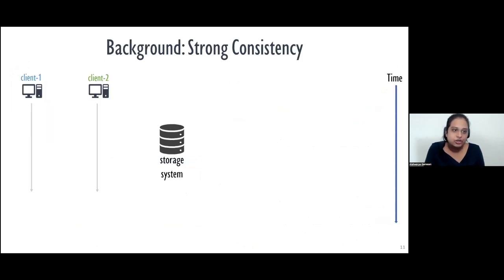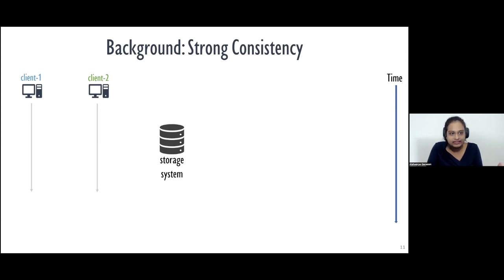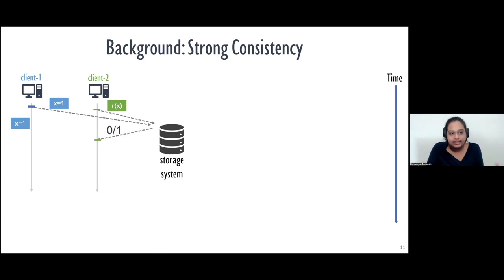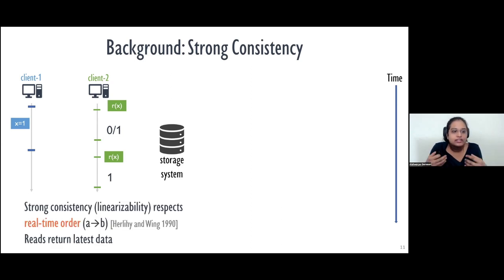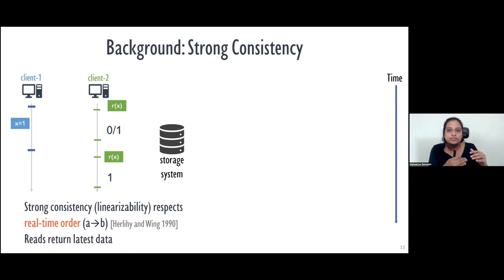Before looking at how strongly consistent storage systems are built, let's examine the guarantees they provide. Say we have a storage system and two clients. If the first client issues a write and the second client tries to read that data, the read can see either the initial or updated value. Once the write completes and the second client issues another read, that read should see the updated value. In a strongly consistent system, these systems respect real-time ordering of operations — if one operation completes and another starts, the second is ordered after the first. As a result, reads always return the latest data.